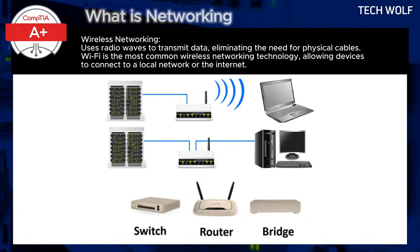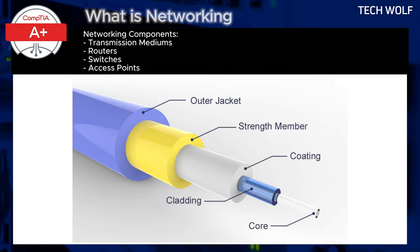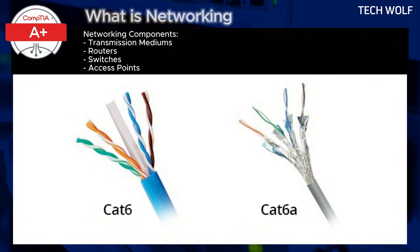The first networking component is transmission mediums — the physical or wireless means through which data is transferred between devices. For wired networks, these mediums include fiber optic cables for high-speed, long-distance communication, and twisted pair copper cables such as CAT-5E or CAT-6 Ethernet cables, which we will discuss in future episodes.